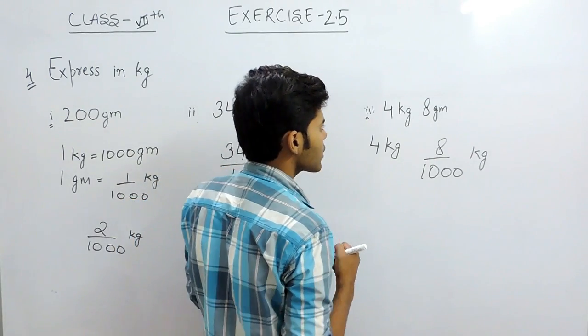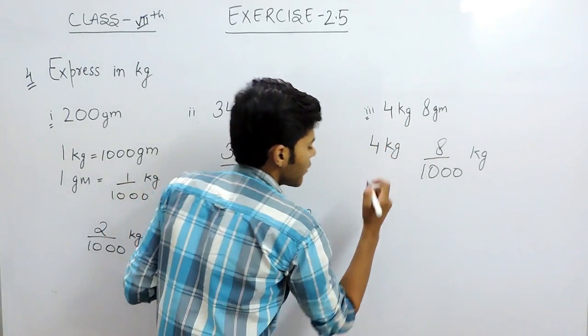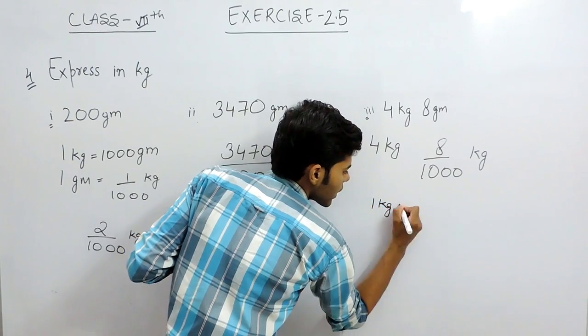this is the first method to solve this question. The second method is that 1 kg is equal to 1000 gram.